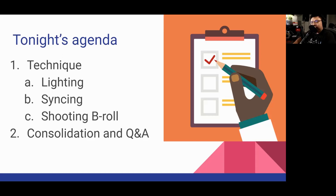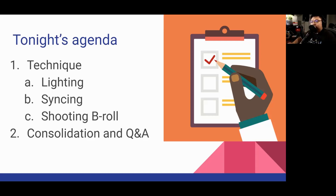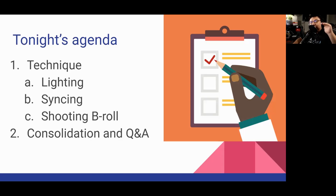Tonight we're going straight into it. I want to talk about the techniques I used to shoot that video. There are basically three things: lighting — how to make your subjects evenly exposed; syncing — specifically lip syncing, how to look into the camera and sync so that you don't need to memorize your lyrics.